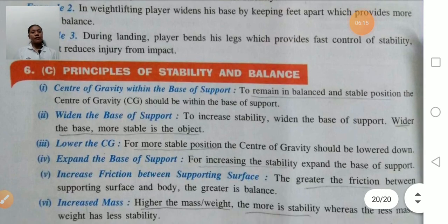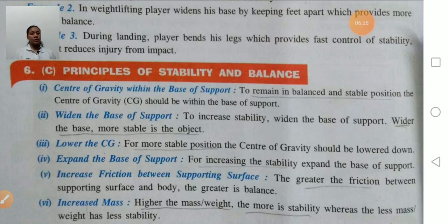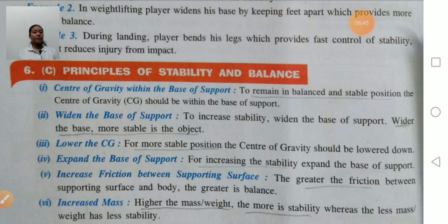Principles of stability and balance. First principle: the center of gravity should be within the base of support. To remain in a balanced and stable position, the center of gravity should be within the base of support. To increase stability, the base should be widened — the wider the base, the more stable the object. For example, a pen has less base compared to a bottle; therefore, the bottle is more stable than the pencil.